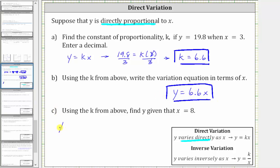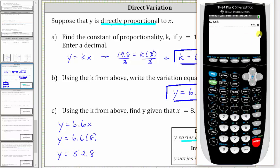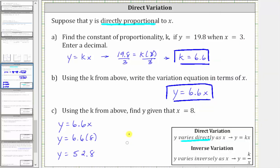So beginning with y equals 6.6x, or 6.6 times x, we substitute 8 for x, which gives us y equals 6.6 times 8. 6.6 times 8 is equal to 52.8, which of course we can check on the calculator, which I've done here. So now we know y is equal to 52.8 given x equals 8.